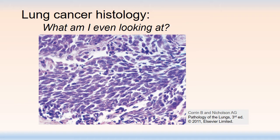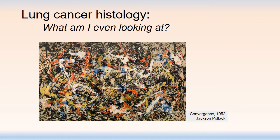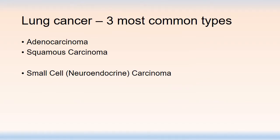The ideal demographic for today's session is a student who would look at an image like this and think, what am I even looking at? This just looks like abstract art. But what I want to do is educate you on the microscopic appearance of the three most common lung cancers. In order from most common: adenocarcinoma is top of the list, followed by squamous carcinoma, followed by small cell neuroendocrine carcinoma. These are the big three lung cancers.